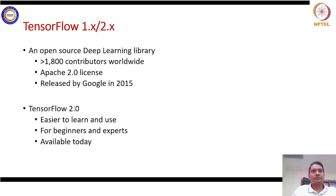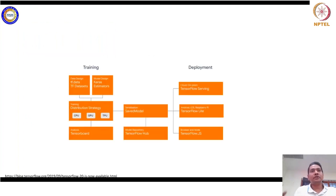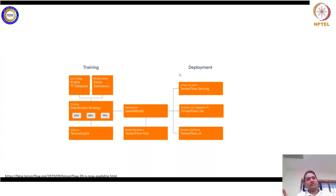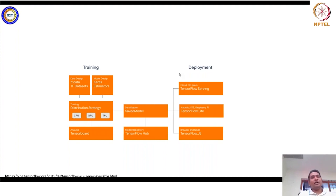If you see the structure or architecture of TensorFlow, the TensorFlow architecture has three main blocks. One is the training block, another is the save and repository block in the middle, and on the right-hand side you can see the deployment block. All these three blocks, introduced in TensorFlow 2.0 and subsequent versions, made life much easier for the development and deployment of deep learning algorithms seamlessly.